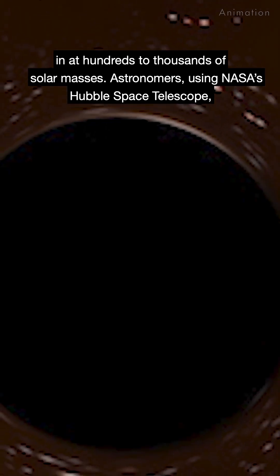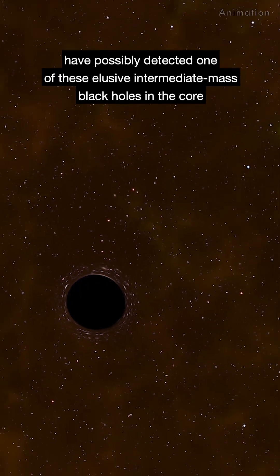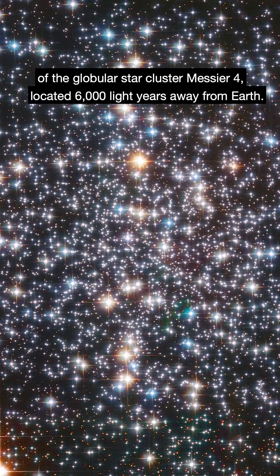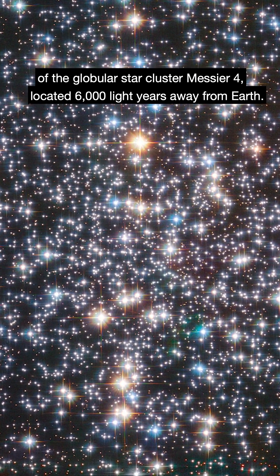Astronomers using NASA's Hubble Space Telescope have possibly detected one of these elusive intermediate-mass black holes in the core of the globular star cluster Messier 4, located 6,000 light-years away from Earth.